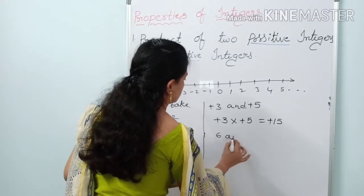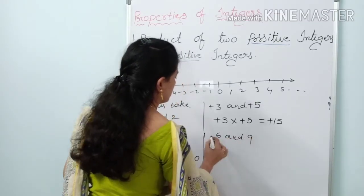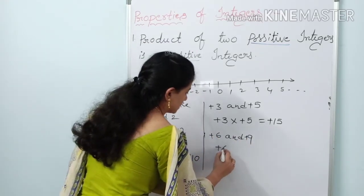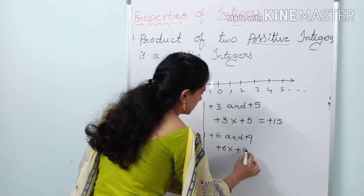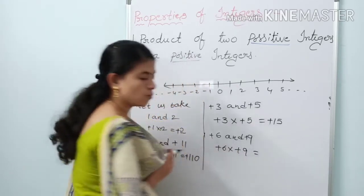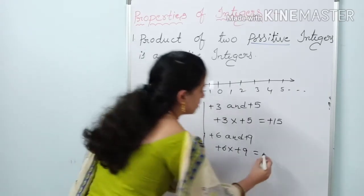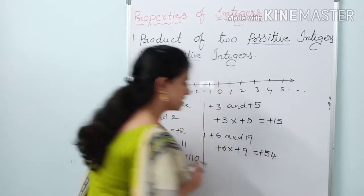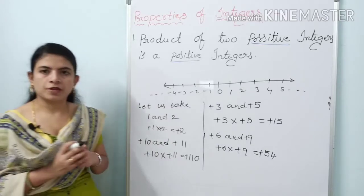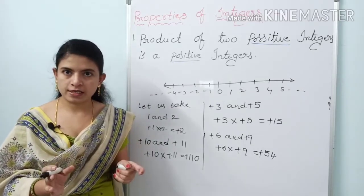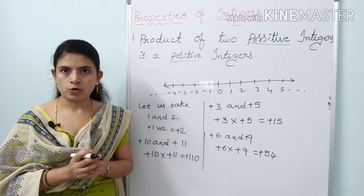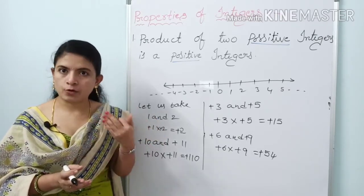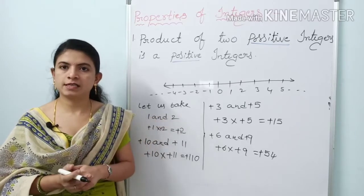Next example: plus 6 and plus 9 — both positive integers. Applying multiplication: plus 6 into plus 9 equals 54. Plus into plus gives plus. So if we take any two positive integers, then their product is a positive integer.